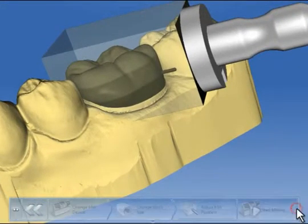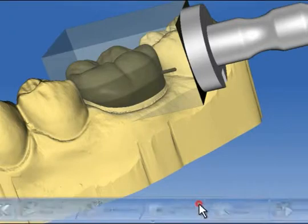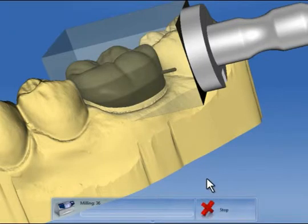We now start the milling process. The software requests us to put the appropriate block into the milling unit. The message is also displayed on the milling unit itself. The milling process can be started with a click on Start or by pressing the Start button on the milling unit. The milling time is calculated and displayed.